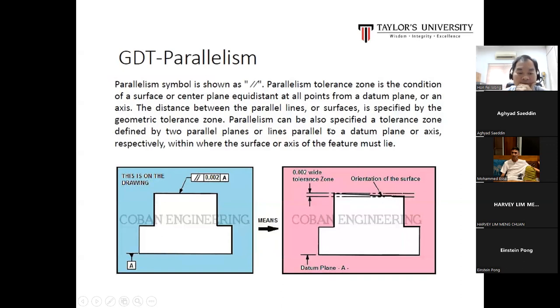Parallelism is the condition of a surface or center plane equal distance at all points from a datum plane or an axis. The distance between the parallel lines or surfaces is specified by the geometry tolerance zone. Parallelism can also be specified as a tolerance zone defined by two parallel planes or lines parallel to a datum plane or axis respectively, where the surface or axis of the feature must lie.